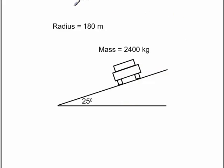Good afternoon. This is Dr. Holt. I want to talk about cars on a track where the track has an incline. Initially, I'm going to start out where there's no friction and slowly add friction so you can see how the forces change. You have a mass of the car of 2,400 kilograms. It's going around a round track with a radius of 180 meters and an angle of 25 degrees.